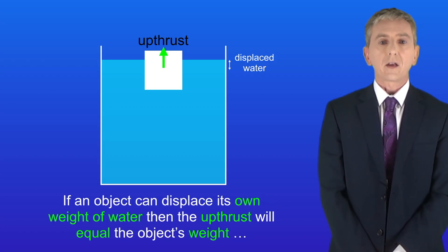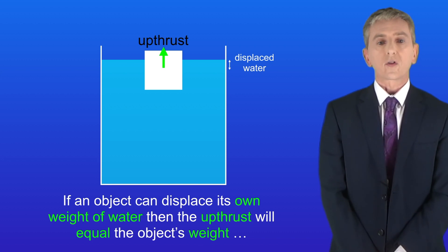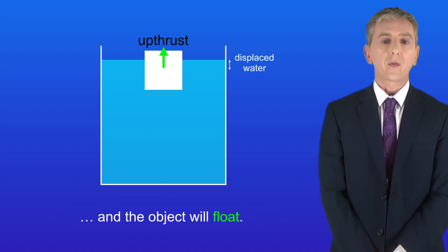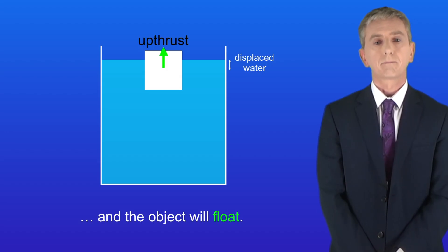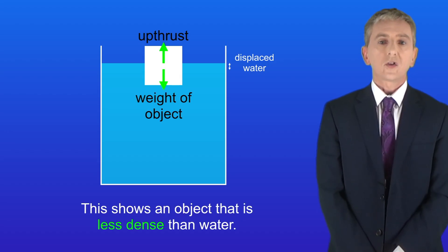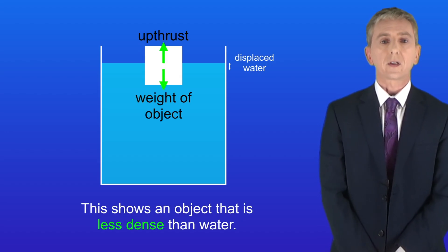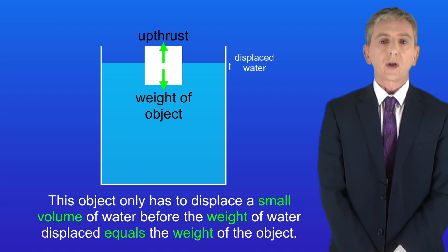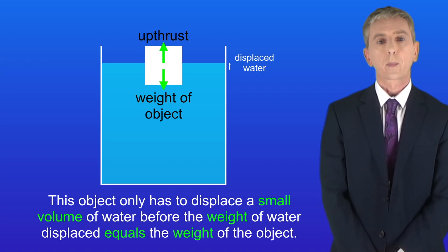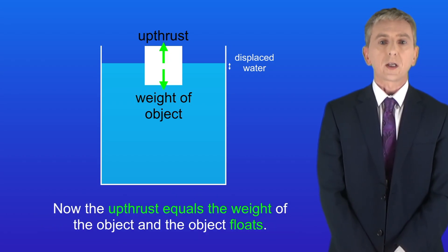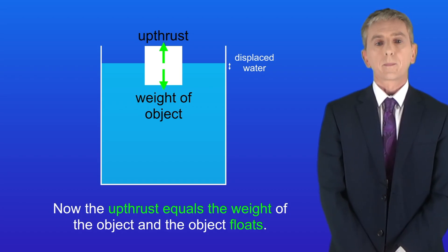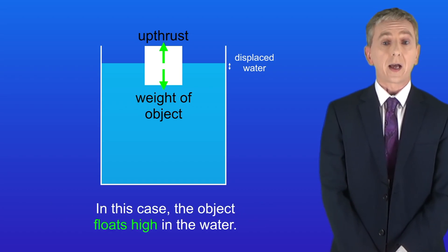If an object can displace its own weight of water, then the upthrust will equal the object's weight and the object will float. This shows an object that's less dense than water. This object only has to displace a small volume of water before the weight of water displaced equals the weight of the object, so the upthrust equals the weight and the object floats — high in the water.